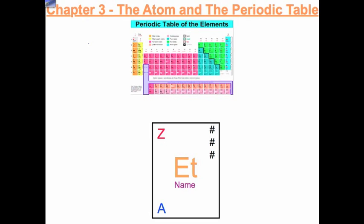This is an example. There's no element ET, but all the boxes are shown the same. In the center, you see the element symbol. Notice that the first letter is capital, the second letter is lowercase. It's always like that. The second letter should never be a capital letter.